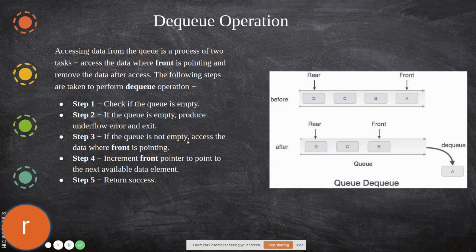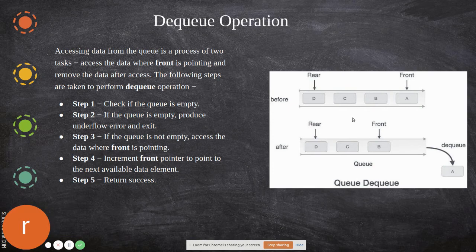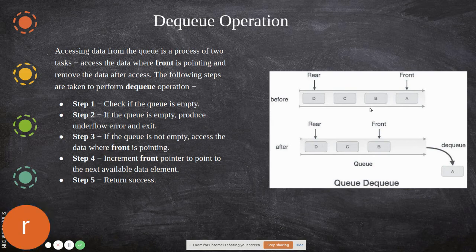temporarily in some temporary variable, then move the pointer to the next position so that element is no more accessible. If the queue is not empty, access the data where the front is pointing, then increment the front pointer to point to the next available element. The previous element is no more accessible because we follow the strict rule that you can access data only through the front and rear pointers.